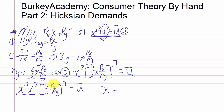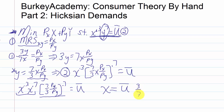Dividing by a fraction means multiplying by its inverse, so we flip those fractions upside down. We end up with x equals u-bar times (3/7 · py/px) raised to the 0.7 power. So once we have x, we just need to solve for y.